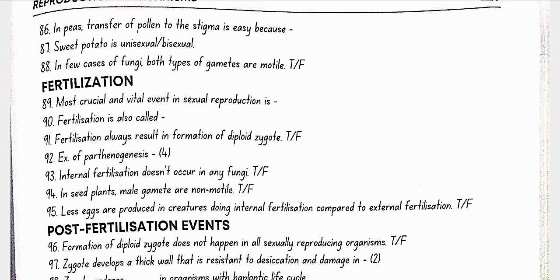The most crucial and vital event in sexual reproduction is fertilization, also called syngamy. Fertilization always results in formation of a diploid zygote — true. Examples of parthenogenesis: rotifers, honeybees, some lizards and turkey. Internal fertilization does not occur in any fungi — false. In seed plants, male gametes are non-motile — true. Fewer eggs are produced in organisms with internal fertilization compared to external fertilization — true.